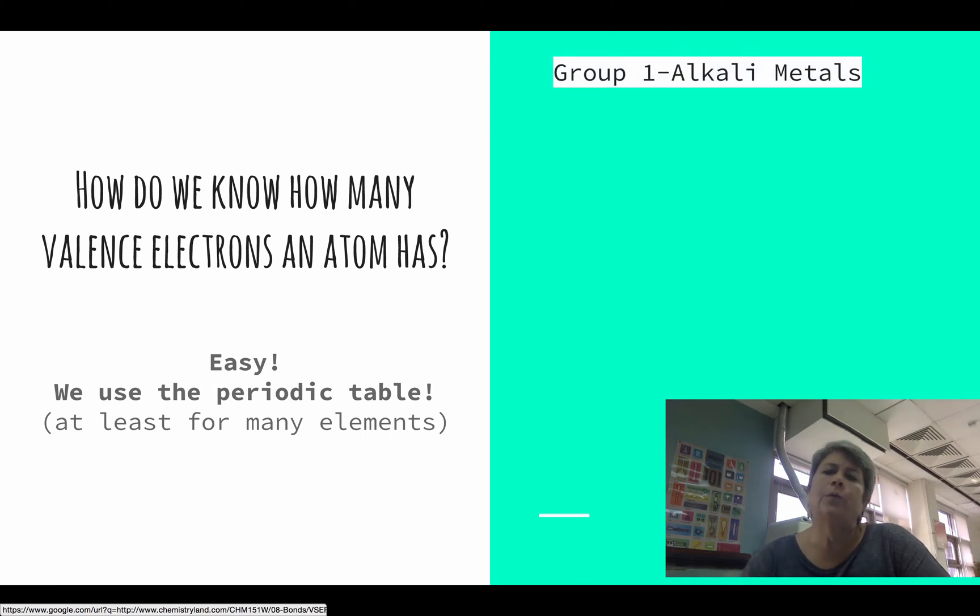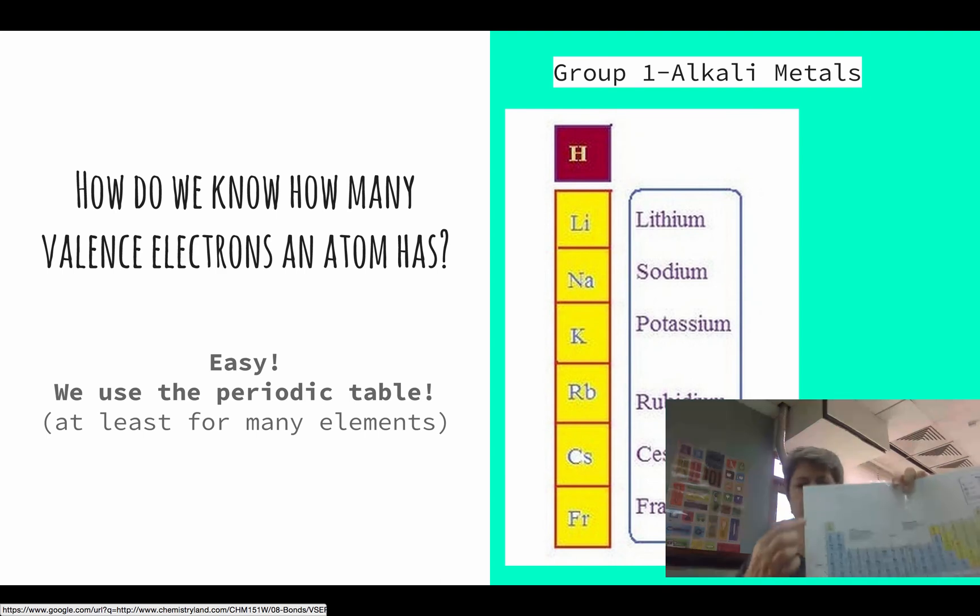Let's look at the group one alkali metals. On the periodic table, group one are these that are in this very first column. Hydrogen is at the top. We know that hydrogen is a nonmetal, but it's in group one with these metals because of its valence electrons.